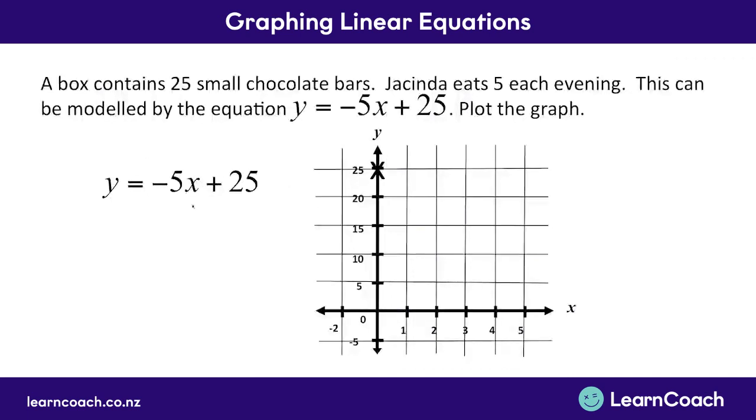Then, knowing the y equals mx plus c method, we're going to look at our gradient. They haven't given us a run, so we know it must be over 1. So our rise is negative 5, meaning we go down 5. And our run is 1 because they haven't given it to us. So we can plot our second point. Now that we know our two points, we can draw a line.